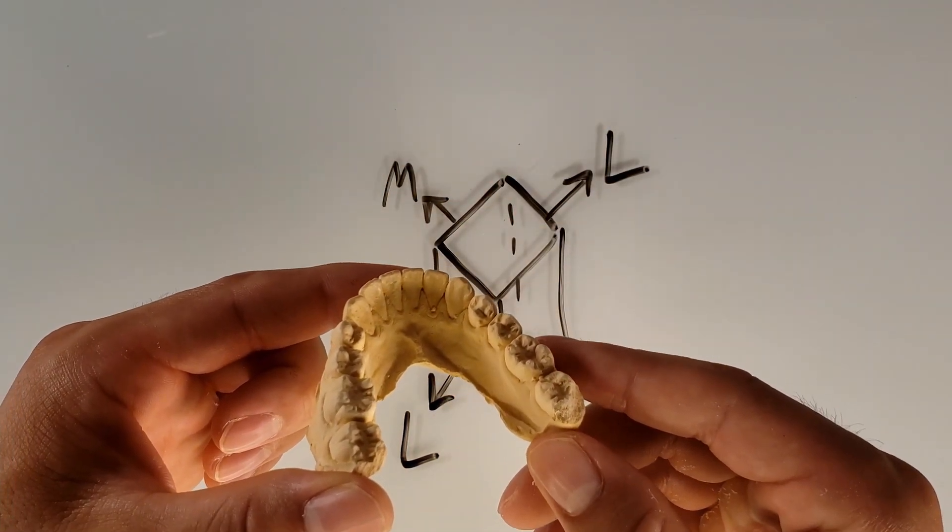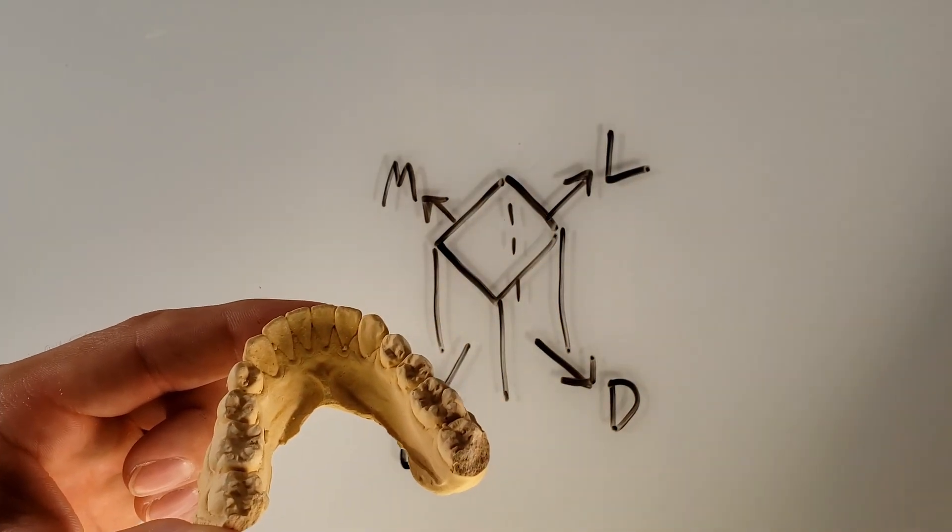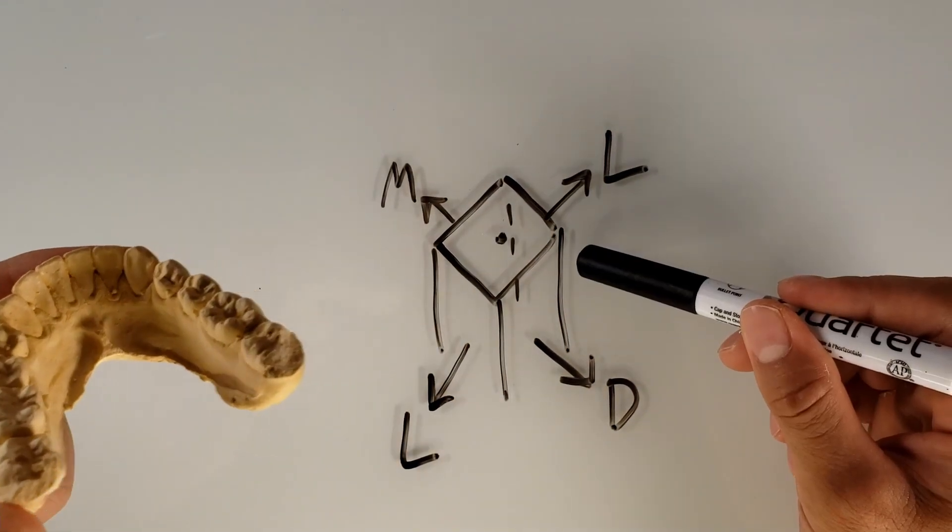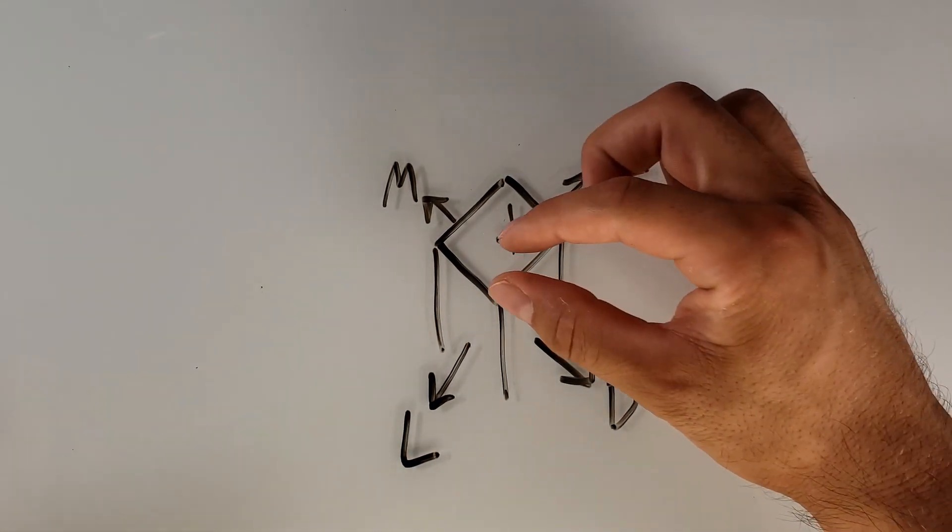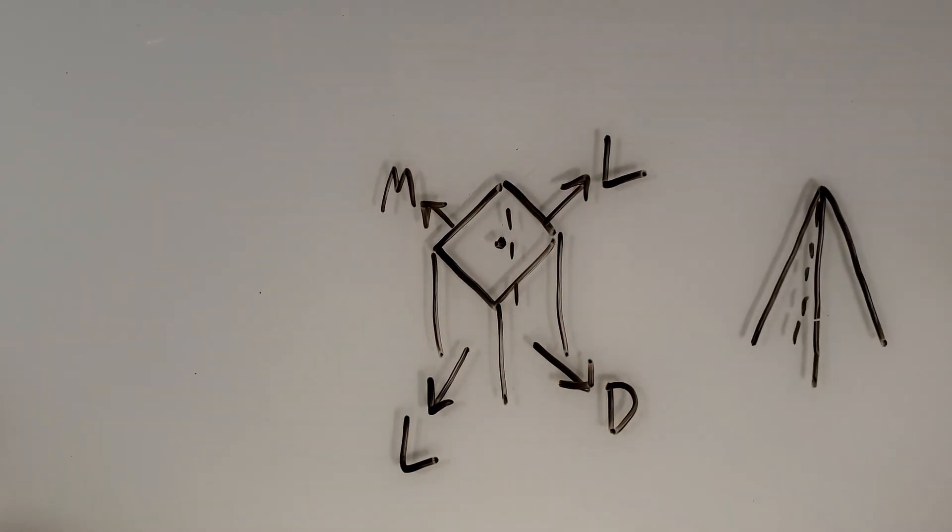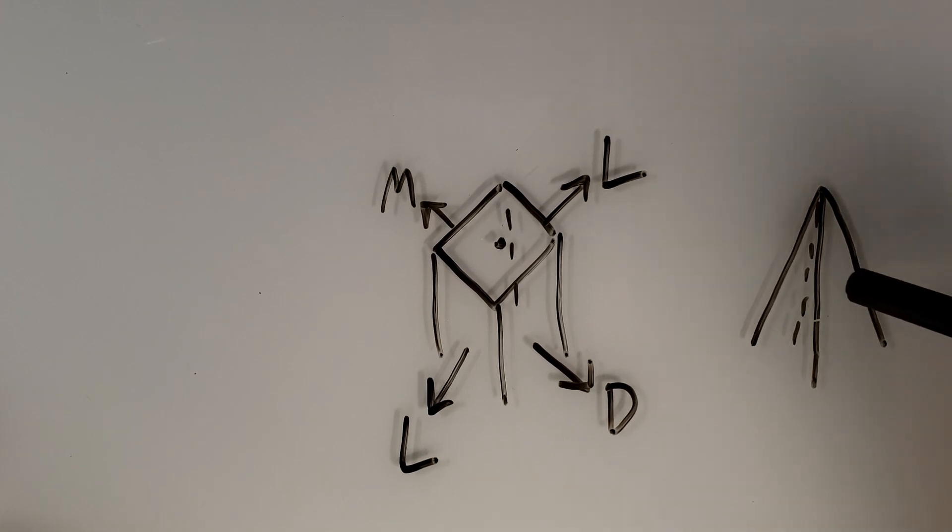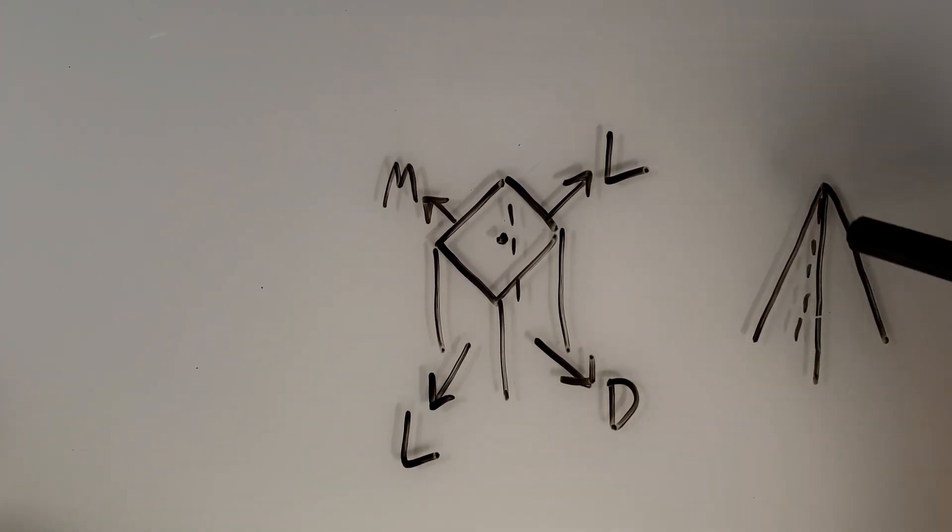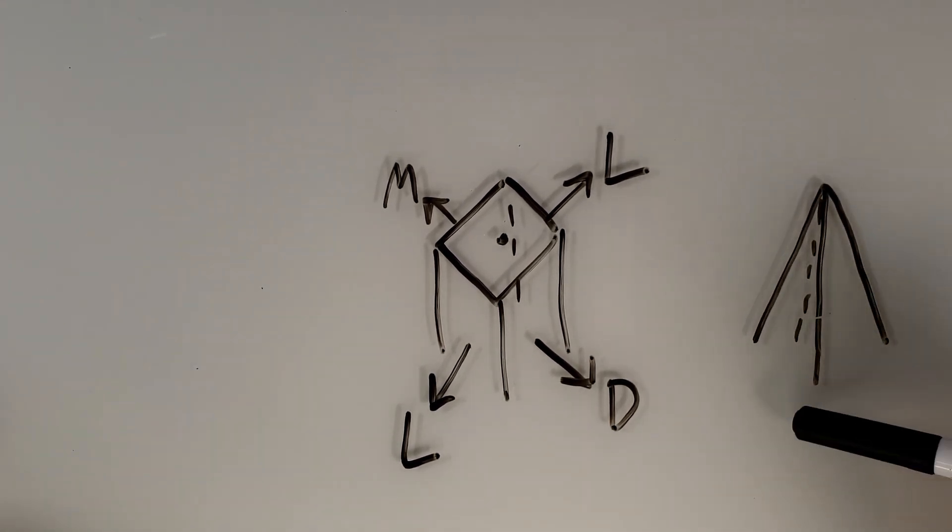So now when we're looking at the cusp, we want to think about this prominence. So let's make a point. Now, if I took this point and I pulled it up, it would make a specific shape. This is a triangular prism. So each of these is a ridge. The whole thing is the cusp.